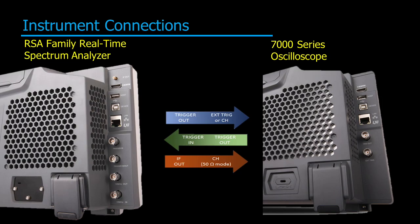First, we connect a couple of connections between the scope and the analyzer on the rear of the instruments. The trigger output from the analyzer goes to the external trigger on the oscilloscope, and the oscilloscope's trigger output goes into the trigger input on the analyzer.